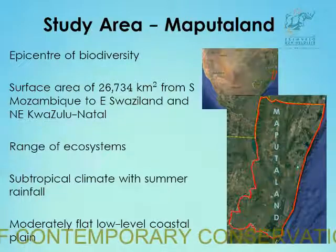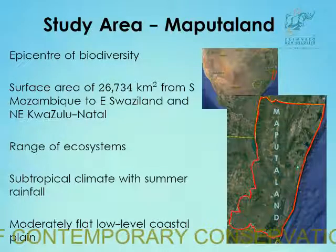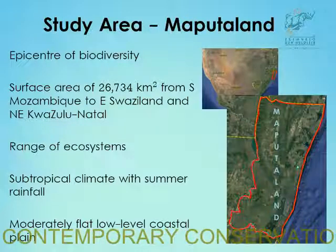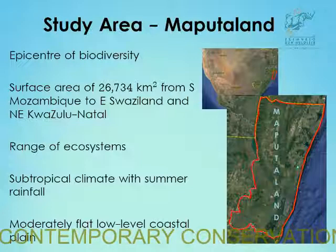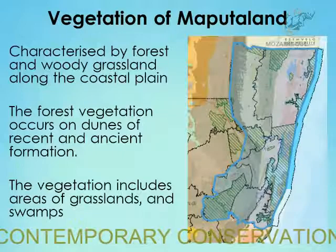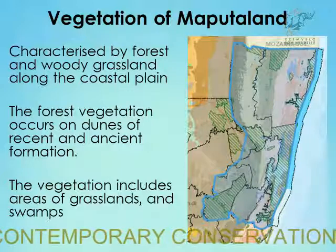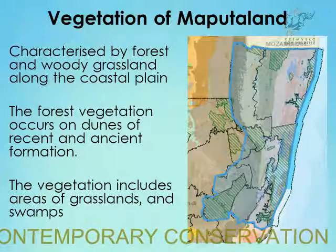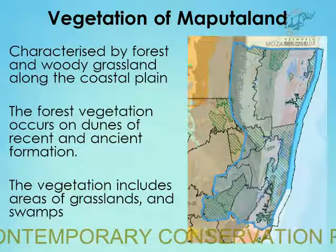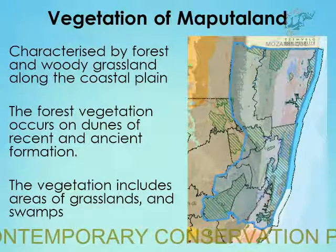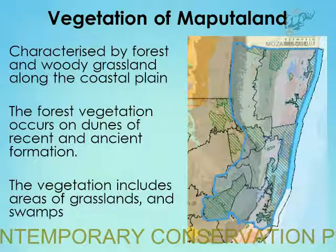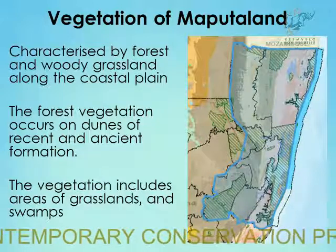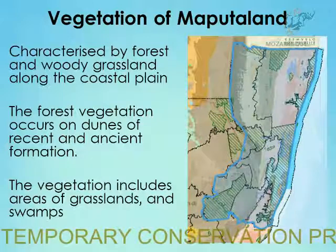The area has a moderately flat, low-level coastal plain. The altitude ranges from 115 meters to 600 meters. The vegetation is mostly forest and wooded grasslands along the coastal plain. Since we started surveying the area, we've only worked around the coast and haven't gone inland as yet. The forest vegetation occurs on dunes of recent and ancient formations, and the vegetation includes areas of grasslands and swamps.